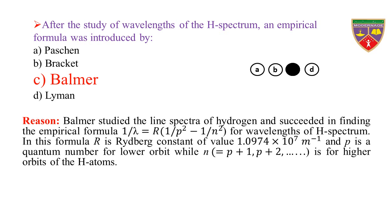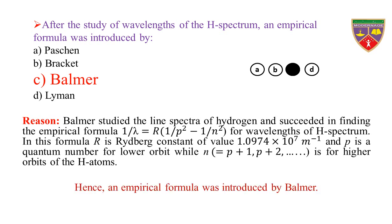Reason: Balmer studied the line spectrum of hydrogen and succeeded in finding the empirical formula: 1/λ = R(1/p² − 1/n²) for wavelengths of the hydrogen spectrum. In this formula, R is the Rydberg constant of value 1.0974 × 10⁷ per meter, and p is the quantum number for the lower orbit, while n = p+1, p+2, and so on, for higher orbits of the hydrogen atom. Hence, the empirical formula was introduced by Balmer.